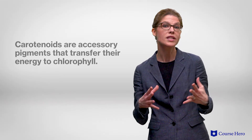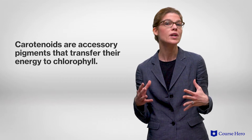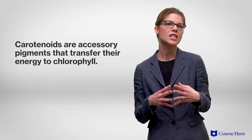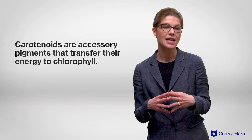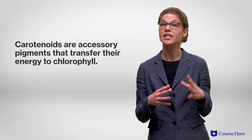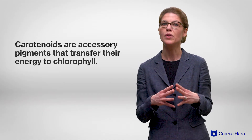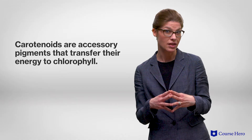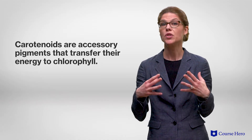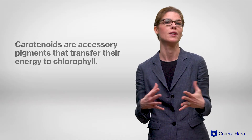Other pigments besides chlorophyll may be involved in photosynthesis as well. For example, carotenoids, which may be red, orange, yellow, or brown. These are known as accessory pigments, as they cannot transfer captured light energy directly to the reactions that make up photosynthesis, but must instead transfer their energy to chlorophyll.